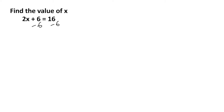Sixteen minus six gives us ten, so we have 2x equals ten. What do you multiply two by to give us ten? Five. So x equals five. And that's our final answer.